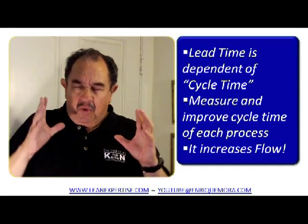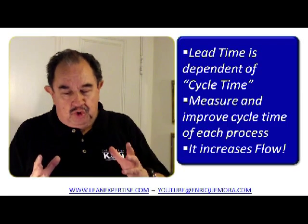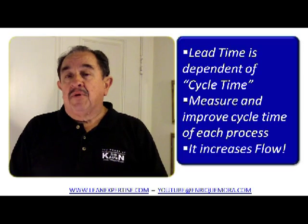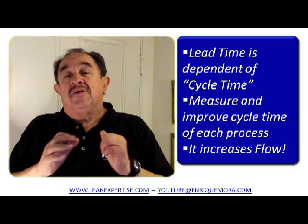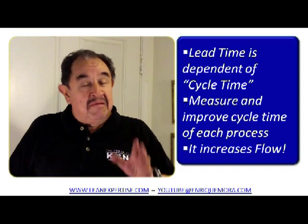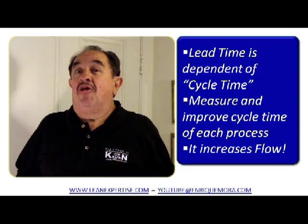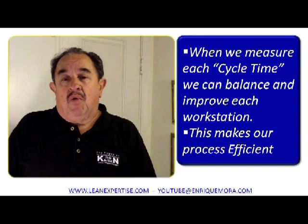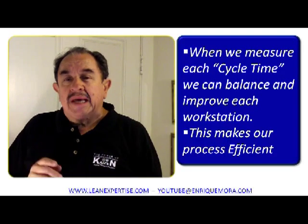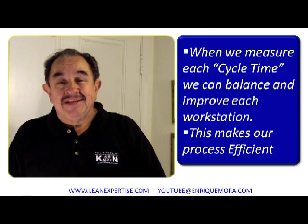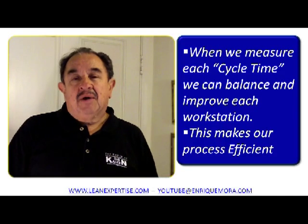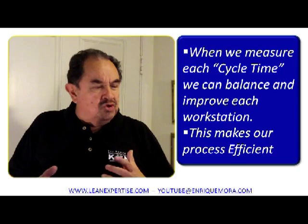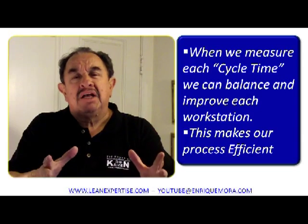Lead time depends directly on cycle time. Cycle time is the time we need to complete some procedure inside a workstation. We want to improve the cycle times of each and every one of our processes, which increases flow — lean manufacturing is all about flow, about quick movements so that everything is produced in a uniform flow. When we measure each cycle time, we can balance and improve each workstation, making our process more efficient.